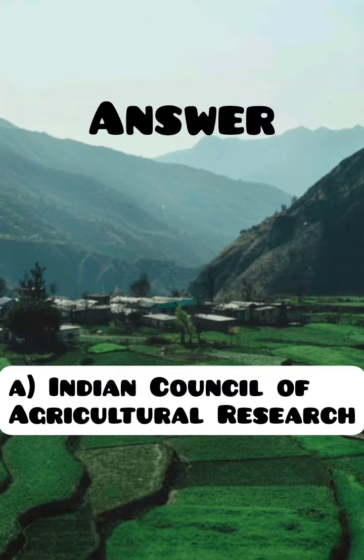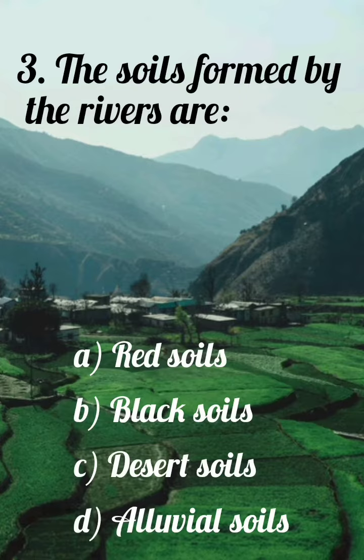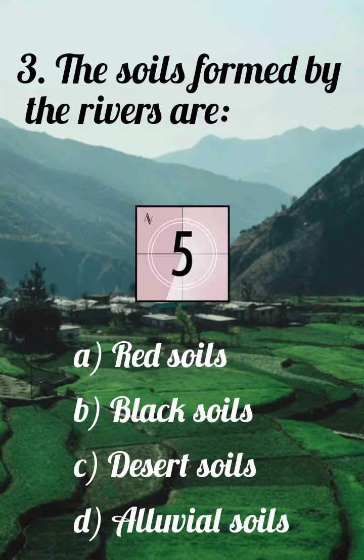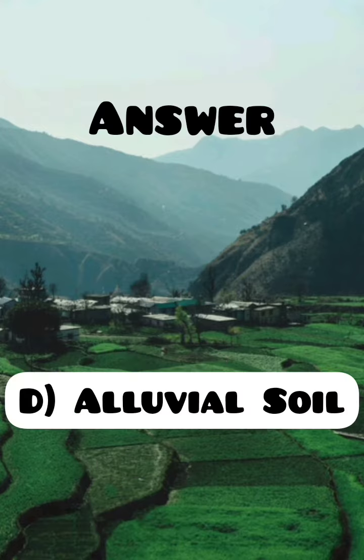The soils formed by the rivers are: A. Red Soils, B. Black Soils, C. Desert Soils, D. Alluvial Soils. Answer: D. Alluvial Soil.